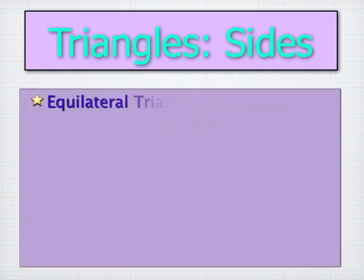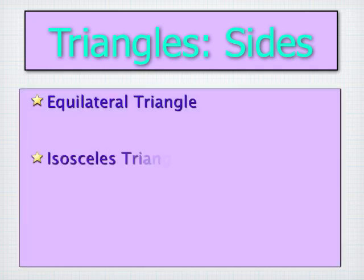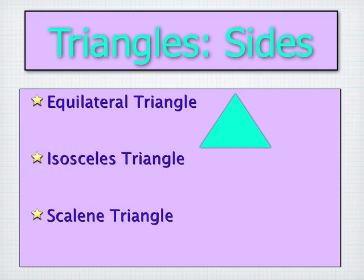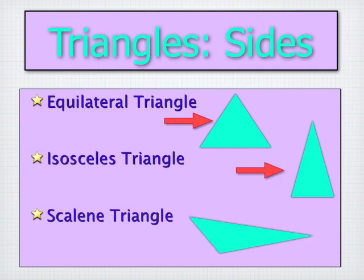First of all, the equilateral triangle, isosceles, and scalene triangles. Equilateral has three equal sides. Isosceles has two equal sides, and the third being different. And scalene has no sides that are equal. They're all three of different lengths.